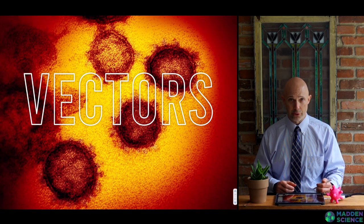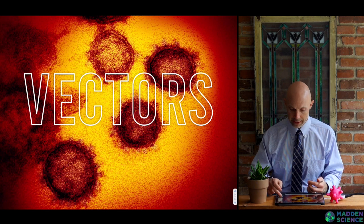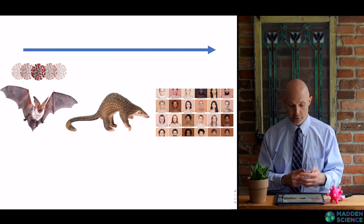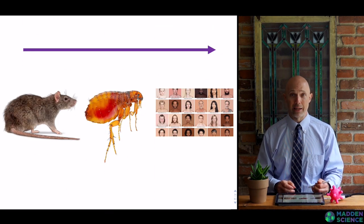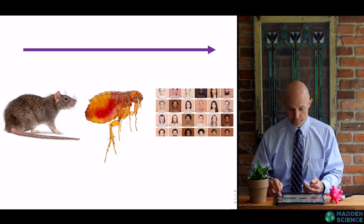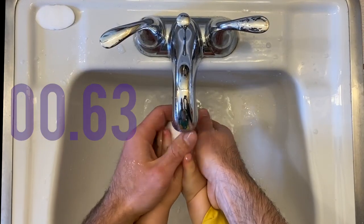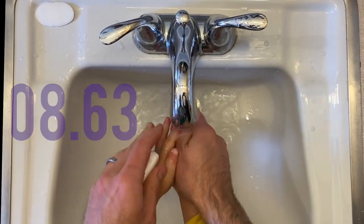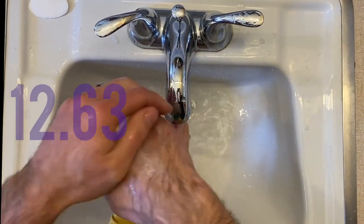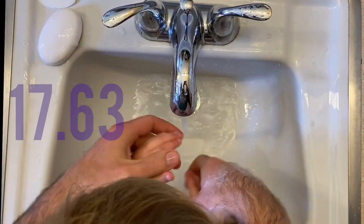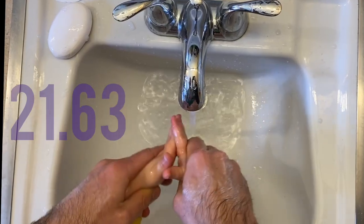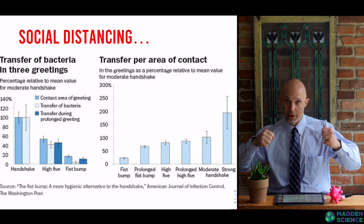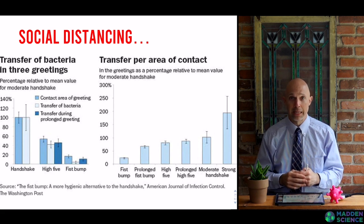This brings up the topic of vectors — how disease is transmitted. Humans are the vectors for COVID-19, which is thought to have begun with a virus in bats, transmitted to pangolins, and then to humans. More classically, with bubonic plague the pathway is rats → fleas → humans. It's really important to keep in mind hygiene and social distancing — handshakes, fist bumps, chest bumps — try to keep your distance and keep your hands clean.